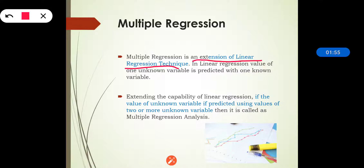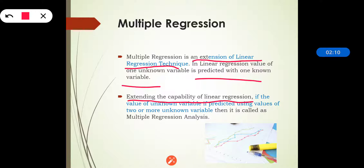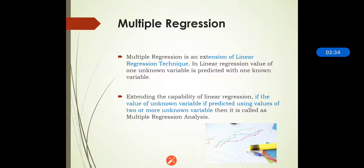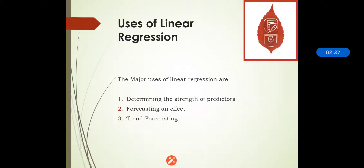Multiple regression is the extension of linear regression. In linear regression, the value of one unknown variable is predicted with one known variable. The linear regression capability is extended: if the value of an unknown variable is predicted using values of two or more variables, then it is called multiple regression analysis, which is the extension of linear regression.